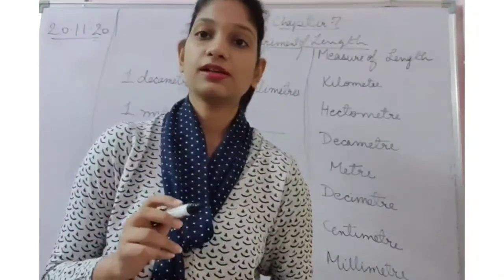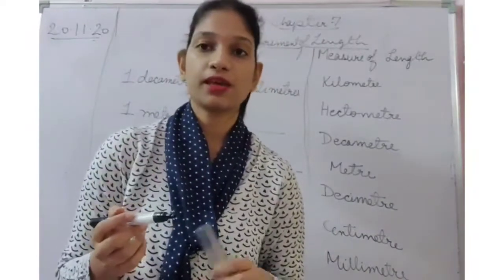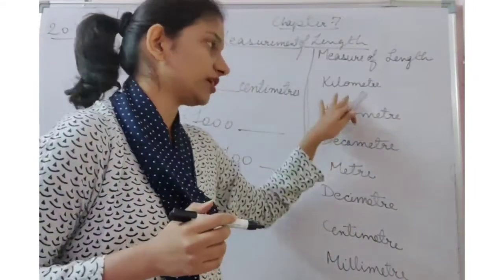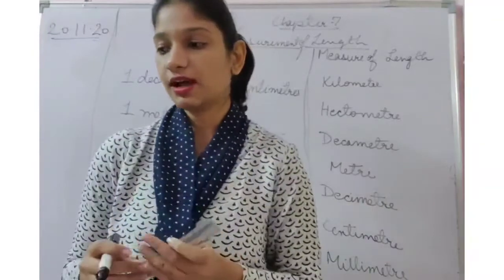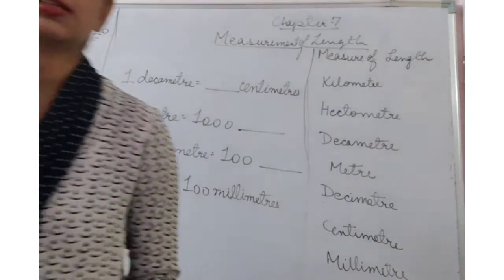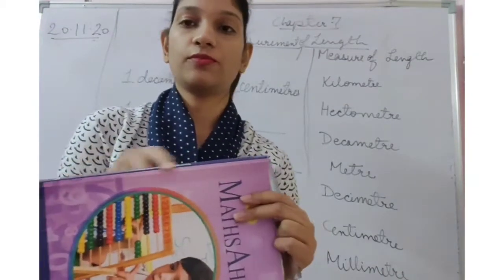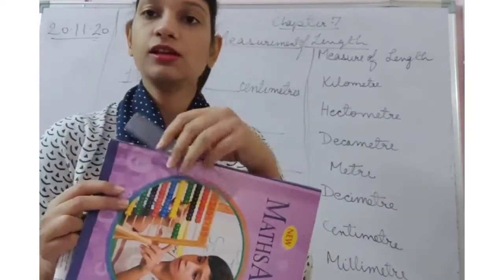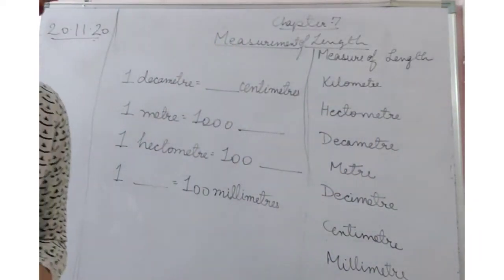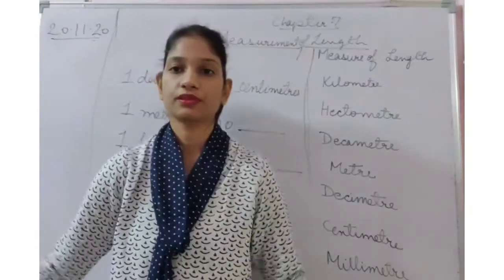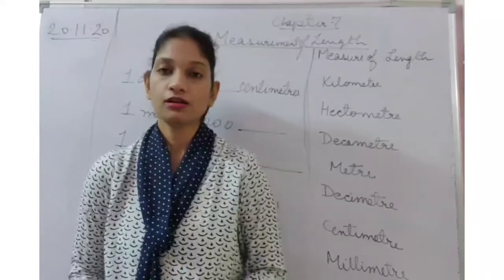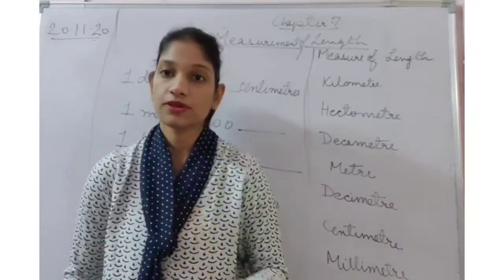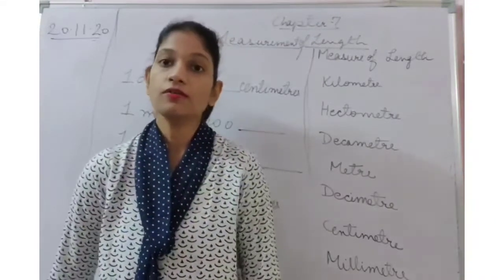Now meters — meter is a slightly bigger unit. 100 centimeters make up 1 meter. Kilometer is an even bigger unit of measuring length. For example, if I have to measure the length of the side of this book, I can measure it using a scale, so it will be measured in centimeters. Now if I talk about the length of one side of this room, it cannot be measured with a scale, so the unit used will be meters.